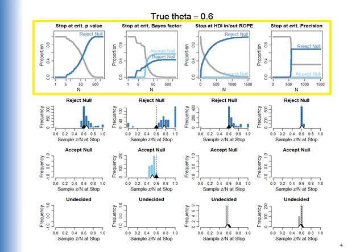Here's what happens when the true theta is 0.6—that is to say, the coin is actually biased to come up heads 60 percent of the time. On the far left, when we stop at the critical p-value, we see that it always correctly rejects the null. Of course, that's all a p-value can do, but here it just does it more quickly than it did under the null hypothesis. The second panel shows what happens when we stop at the critical Bayes factor. Now notice here, because of early random events, it will in fact accept the null about sixty percent of the time, even though the null is false.